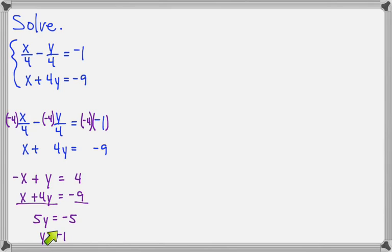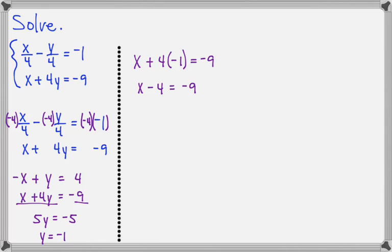Now take that negative 1 and plug it back into either equation. I bet I can guess which one you choose: we choose the one with the whole numbers. So x plus 4 times negative 1 equals negative 9. Let's add 4 to both sides and we'll have x equals negative 5, so our solution looks like negative 5 comma negative 1.